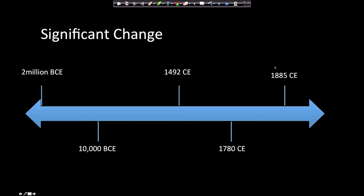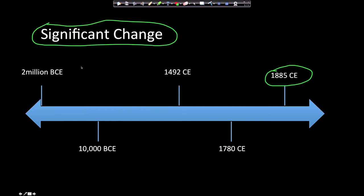Today I'd like to talk about the Scramble for Africa, which occurred in approximately 1885. But before we do that, we need to talk about significant changes that occurred prior to 1885. First, we're going to talk about the Paleolithic era, which was the era from 2 million BC all the way up until 10,000 BC. Then in 2000 BC, something happened called the Neolithic Revolution.